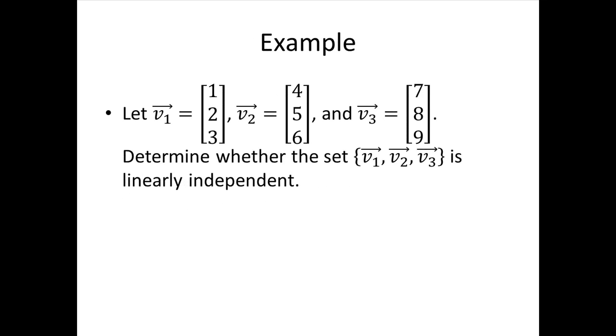So let's look at an example. Let's let v1 be the vector [1, 2, 3], v2 be [4, 5, 6], and v3 be the vector [7, 8, 9]. So put those three vectors into a set, and let's determine whether that set v1, v2, v3 is linearly independent.